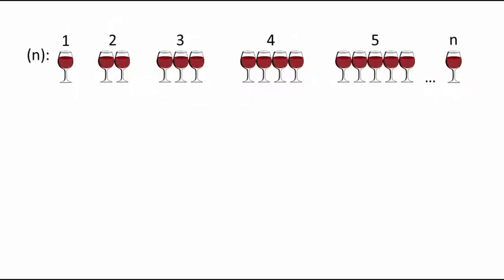Okay, firstly let's list the number of glasses from one all the way up to n. These are the term numbers and are referred to with the letter n. Next, we record the number of clinks for each term and we're going to find a formula for the nth term and then use it to find the number of clinks with ten glasses.